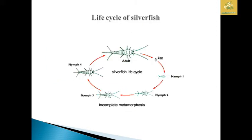The life cycle of Silverfish goes from adult, which lays eggs, then nymph stages 1, 2, 3, 4, and finally adult. They have 4 instar stages in the life cycle and the metamorphosis they undergo is incomplete metamorphosis.